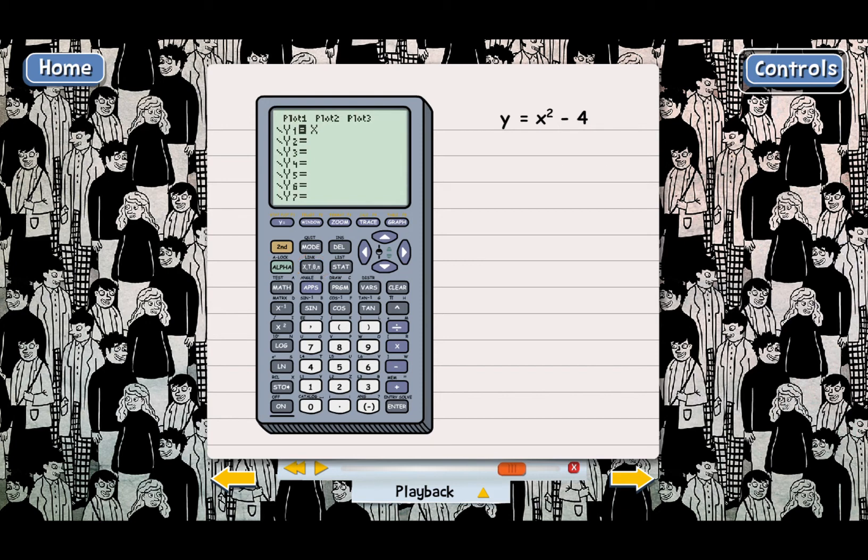Now, to do an exponent, you first have to press the exponent key, which is right here. This symbol is kind of like a little hat, but it's the symbol for an exponent. It's actually used quite a bit. And so we press the exponent key, and that puts the hat after the x. And now we enter the exponent, which is 2. Why don't you go ahead and press 2. Good.